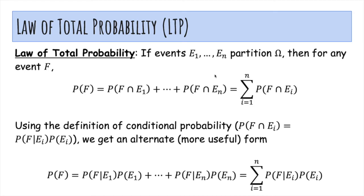The law of total probability says if you have a partition E1 through EN, then to compute the probability of an event F, you can calculate the sum of the probability of F intersected with each of the EIs.